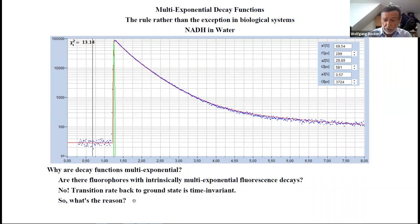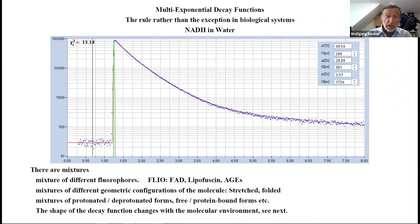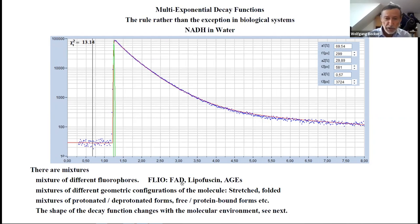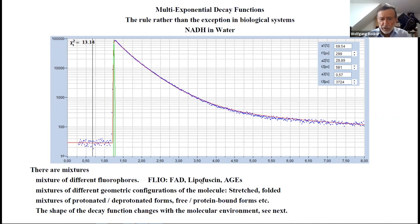The reason is the environment. Other reasons may be that we simply have mixtures of different fluorophores. In FLIO, we have many fluorophores, the most important ones being FAD, lipofuscin, and advanced glycation end products. By the way, lipofuscin and AGEs are themselves mixtures of slightly different compounds. The way these compounds are mixed can depend on the metabolic state of the retina, so we will see a change.